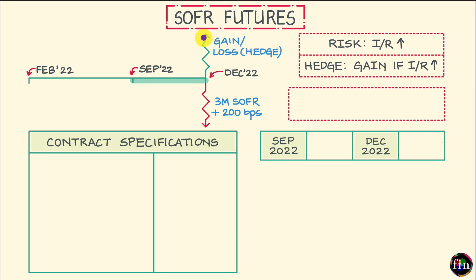The design of one-month SOFR futures is such that these futures are structurally as similar as possible to the federal funds futures contract. The design of three-month SOFR futures is such that this contract is structurally as similar as possible to the eurodollar futures contract.